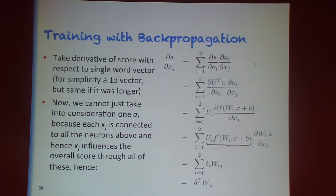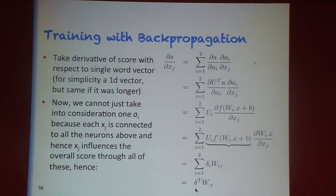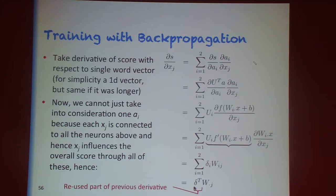If you work out the derivative of the score with respect to the word representation, you end up with the same delta term — u_i times the derivative of f calculated on the linear term. This same quantity is used again, so you can make use of it multiple times.